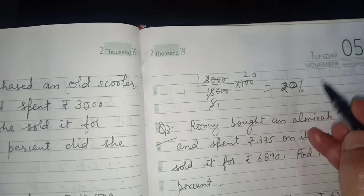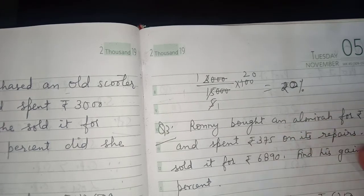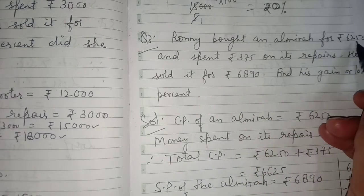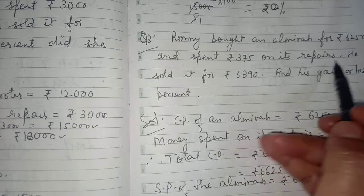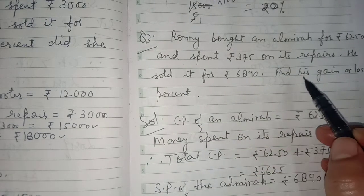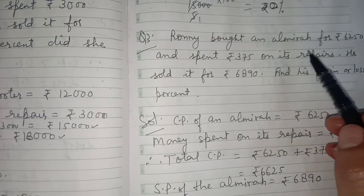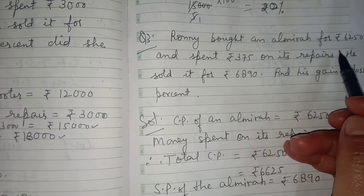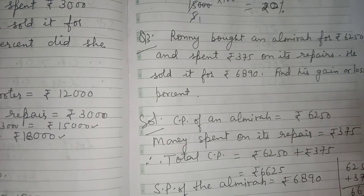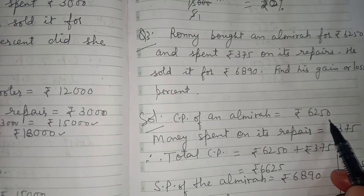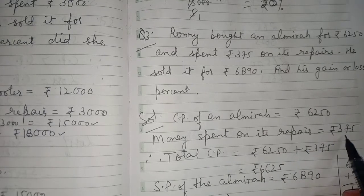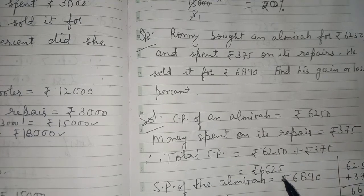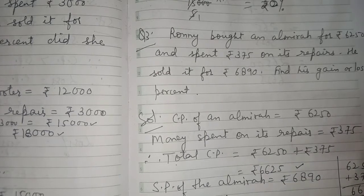So Mandira's gain percent is 20%. Next, Question 3: Ronnie bought an almira for rupees 6,250 and spent rupees 375 on its repairs. He sold it for rupees 6,890. We need to find his gain or loss percent. Total CP = 6,250 + 375 = rupees 6,625.